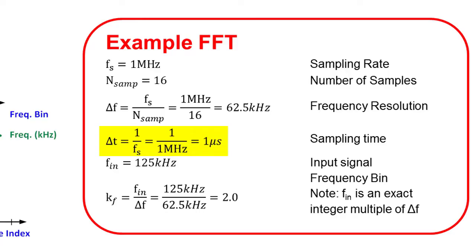The time required for each sample is calculated as 1 divided by the sampling frequency, or 1 divided by 1 megahertz, which is equal to 1 microsecond. In this example, the time domain input signal is a 125 kilohertz sinusoidal waveform. Translating the time domain sine wave to the frequency domain will create a component in a frequency bin. The frequency bin is determined by dividing the input signal frequency by the frequency resolution, which in this case is 125 kilohertz divided by 62.5 kilohertz, which is 2.